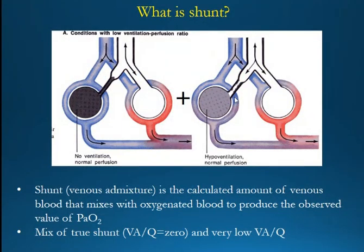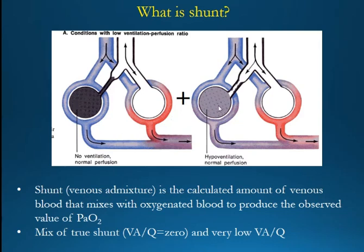So what is shunt? Shunt, more properly called venous admixture, is the calculated amount of venous blood that mixes with oxygenated blood to produce the observed value of PaO2. Shunt is the amount of venous blood that, even though it passes from the venous side to the arterial side, keeps the characteristics of the venous side. It is a mix of true shunt, which is non-ventilated perfusion units, and low V/Q units — units with low V/Q ratio.